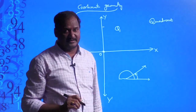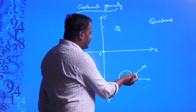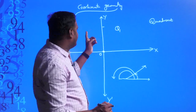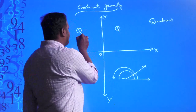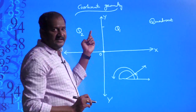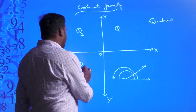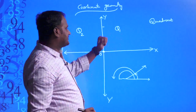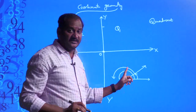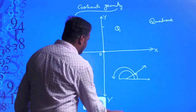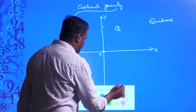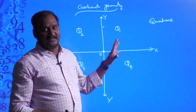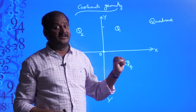After Q1, going in the anti-clockwise direction, this part is said to be the second quadrant, indicated by Q2. After the second quadrant, the next part is the third quadrant, Q3. And coming back, this last part is obviously the fourth quadrant, Q4. Now I am going to define what is meant by a quadrant: a quadrant is the region located between two axes.